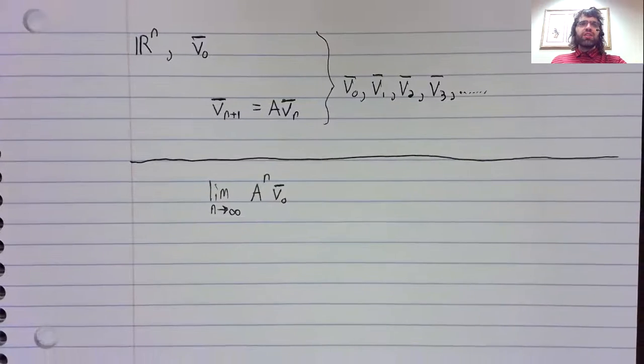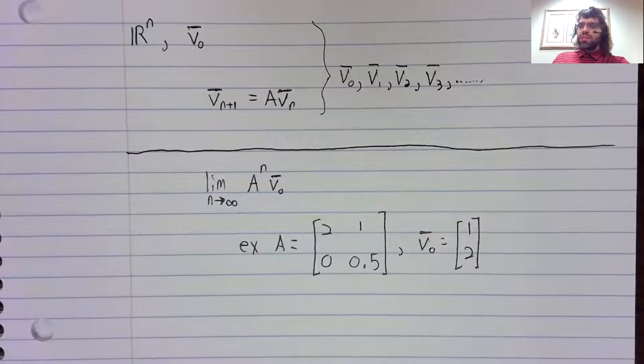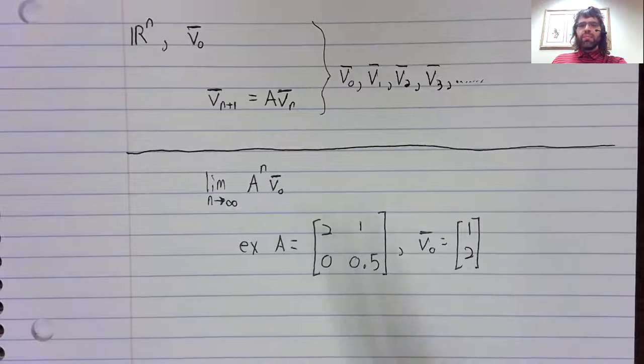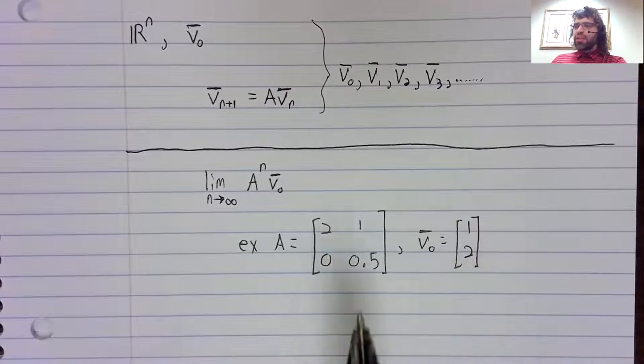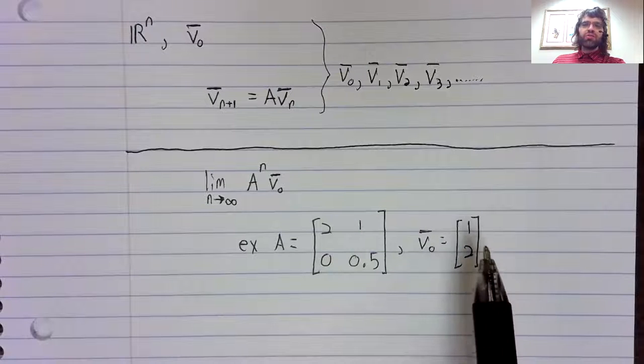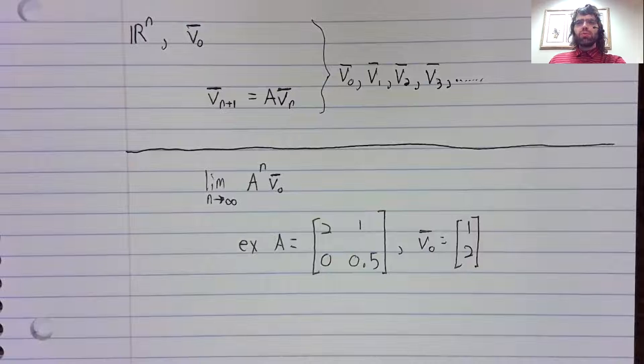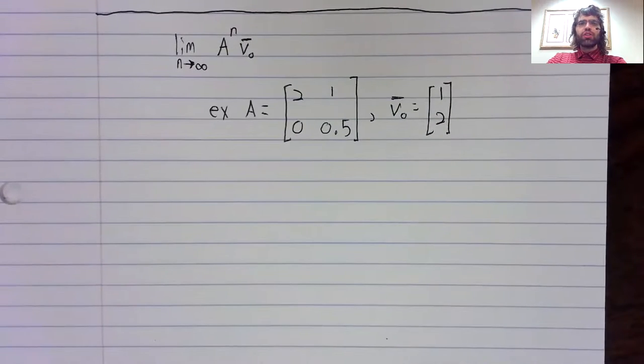And let's illustrate this via example. Let's say this is A and this is V_0. So this is not a stochastic matrix, this is not a probability distribution. So it's a discrete dynamical system without being a Markov chain.